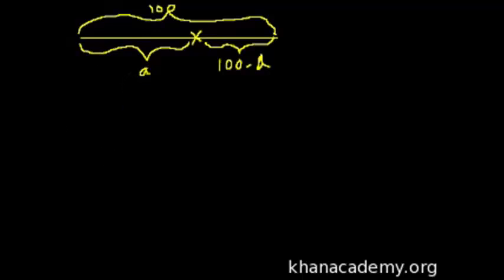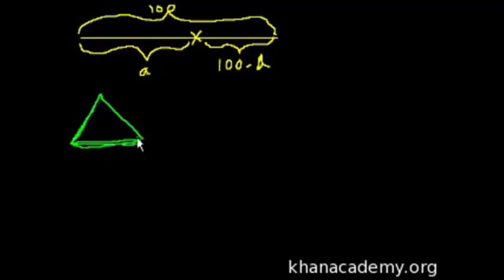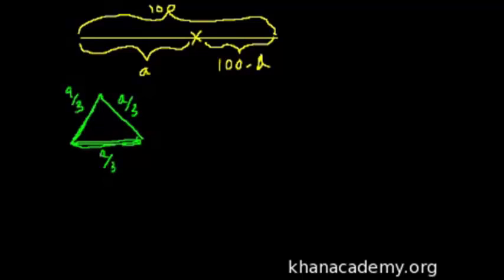So what is the triangle going to look like? This is my equilateral triangle - all the sides are equal. How long are each of the sides going to be? Well, the whole perimeter is a, so each side has to be a over 3. So all three sides are a/3.